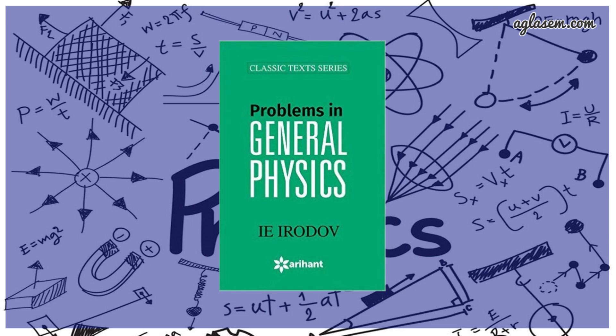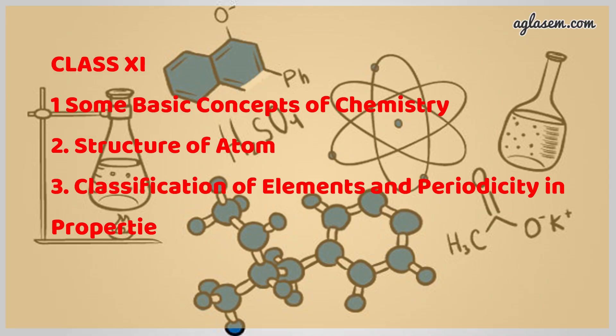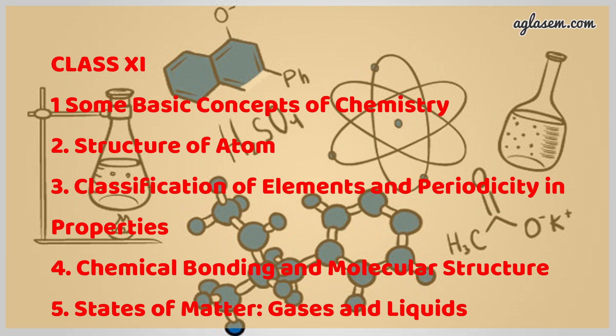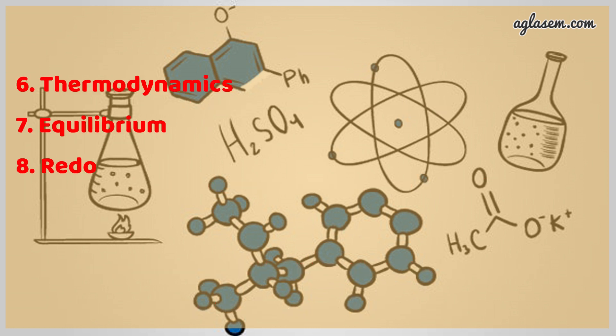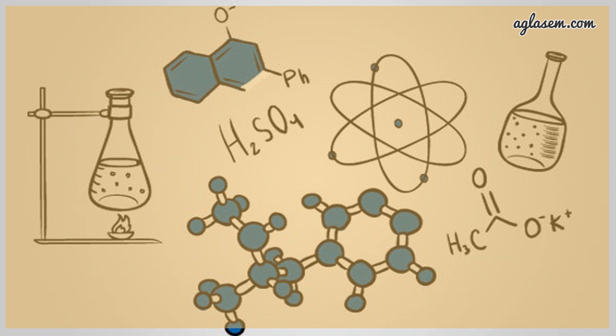Coming to the syllabus for chemistry — Chemistry for Class 11: Some Basic Concepts of Chemistry, Structure of Atom, Classification of Elements and Periodicity in Properties, Chemical Bonding and Molecular Structure, States of Matter — Gases and Liquids, Thermodynamics, Equilibrium, Redox Reactions, Hydrogen, S-Block Elements — Alkali and Alkaline Earth Metals.